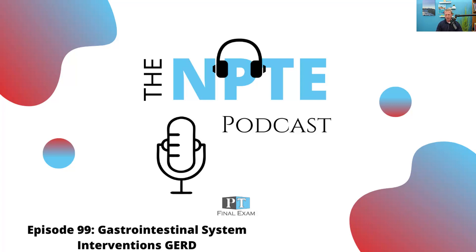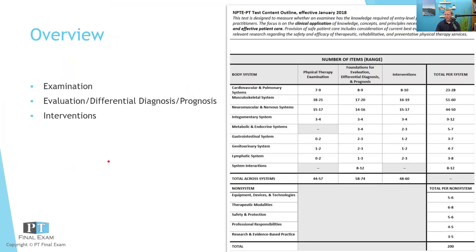Today we've got a practice question related to the gastrointestinal system. As we go through the FSBPT content outline, we do our best to talk about each of the systems. Today we'll be talking about the gastrointestinal system. This one does go through examination, evaluation, and intervention, so we will be talking today about interventions in the GI system. Only a handful of questions are related to the gastrointestinal system, but we're here to help you prepare so you can absolutely dominate on all of the systems.